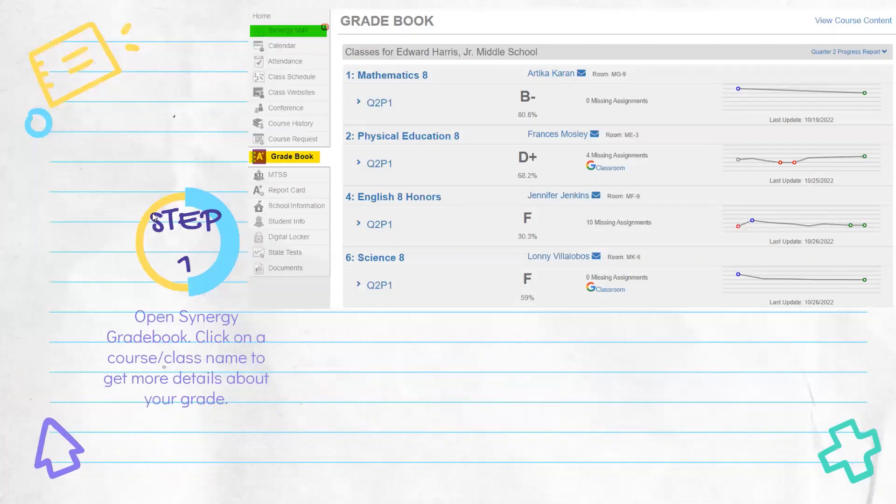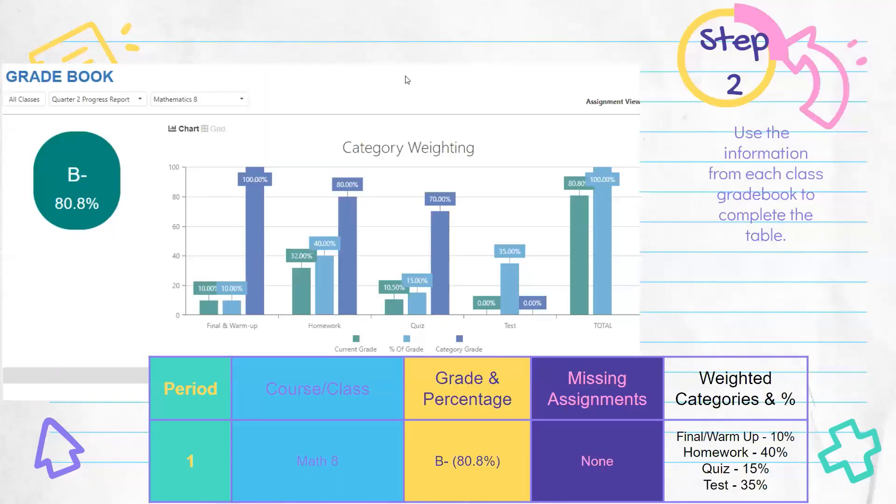So step one, you open up the synergy grade book, click on your course name. We'll start with mathematics for this student. So when I click on the grade book, I can see that this student has a B minus in the class at 80.8%. So for period one, I would write or type math eight because that's the class, the grade and the percentage B minus and in parentheses 80%.